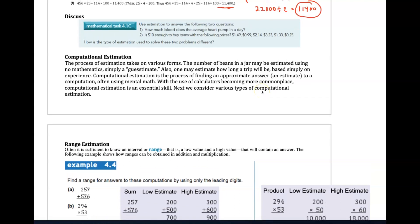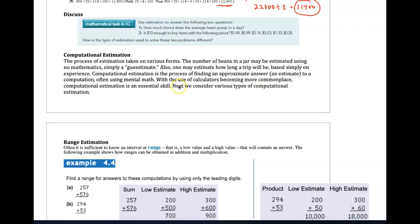We move on to computational estimation and start thinking about what is the purpose of estimating, how do we estimate, and what are the processes of estimation. The ones we talk about in this class are two of them. You have the guesstimate - the number of beans in a jar may be estimated using no mathematics, just a guesstimate. You may also want to estimate how long a trip will be based on experience.